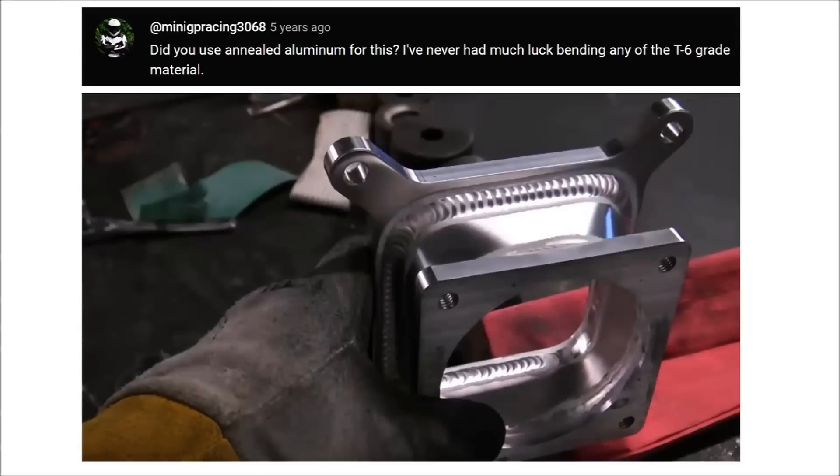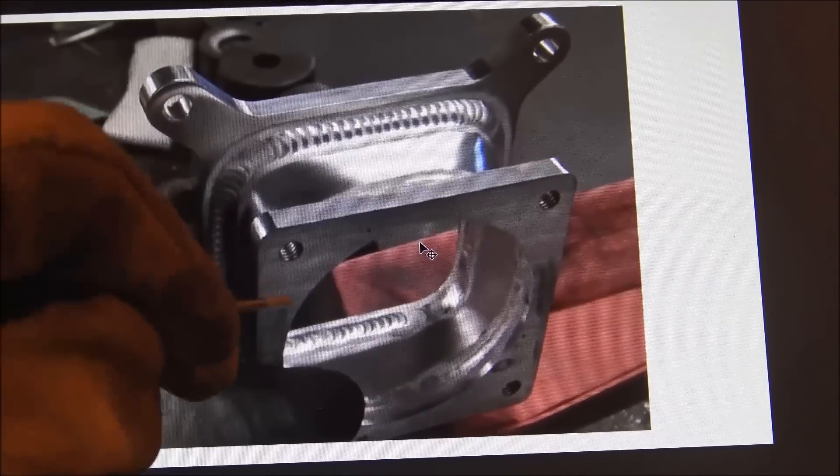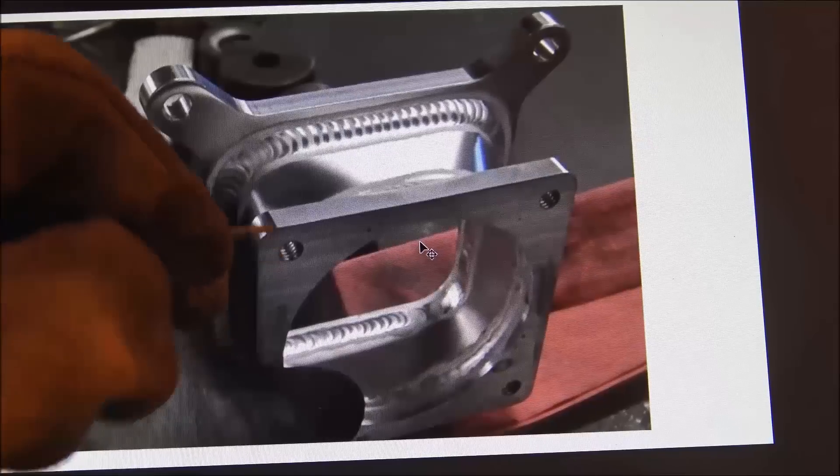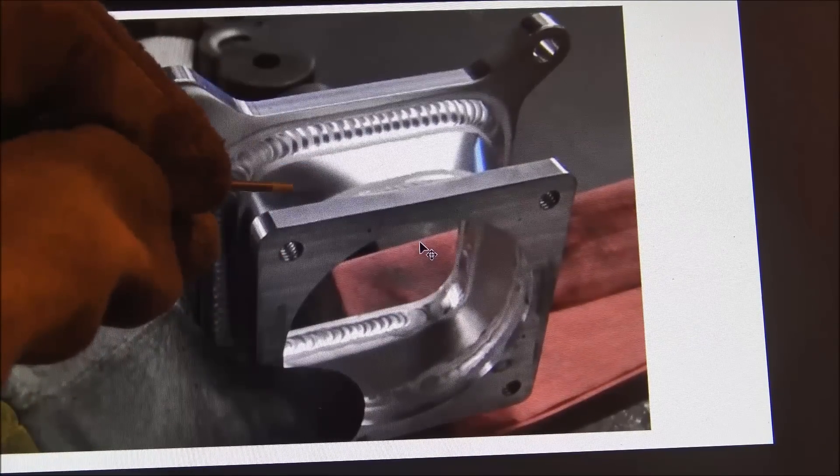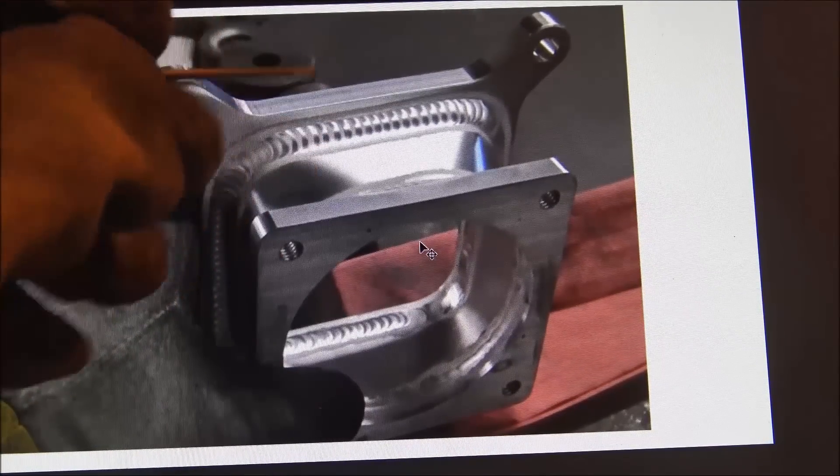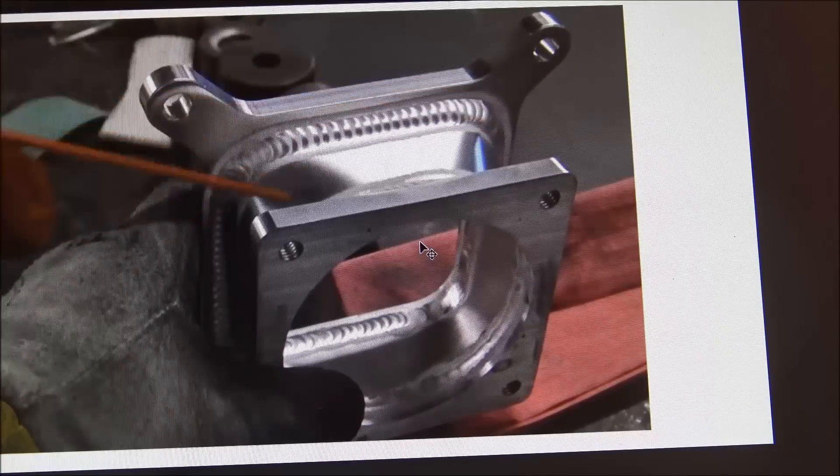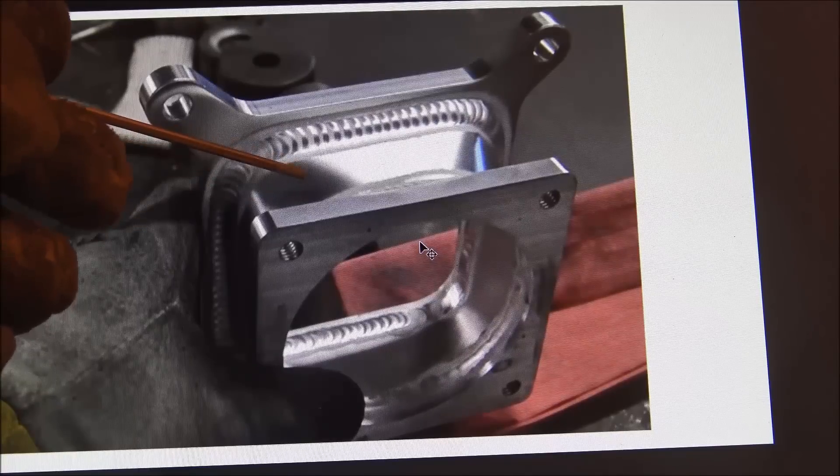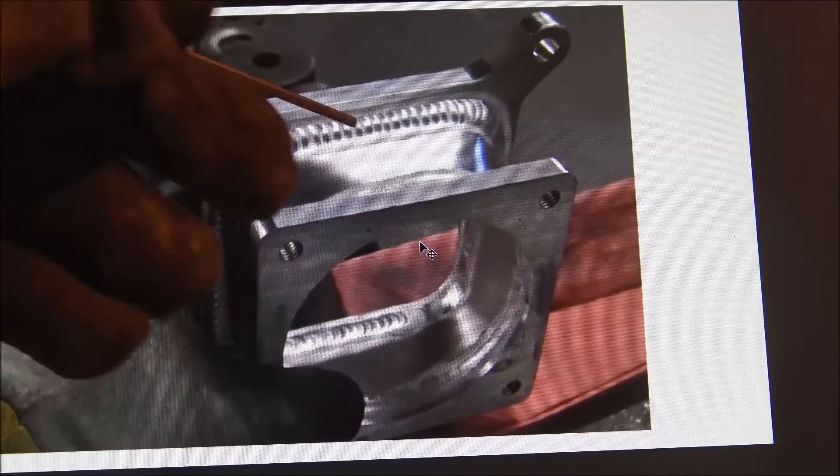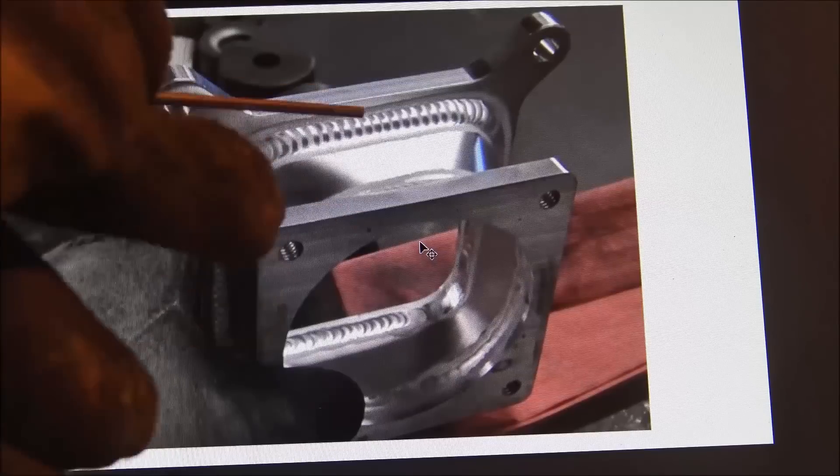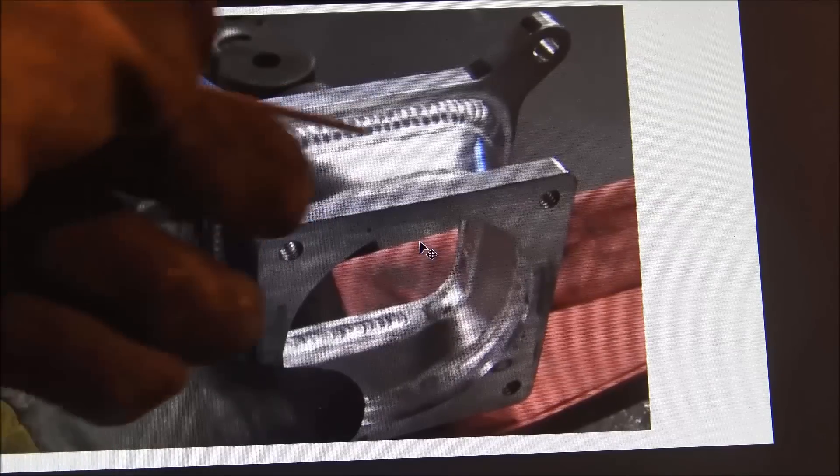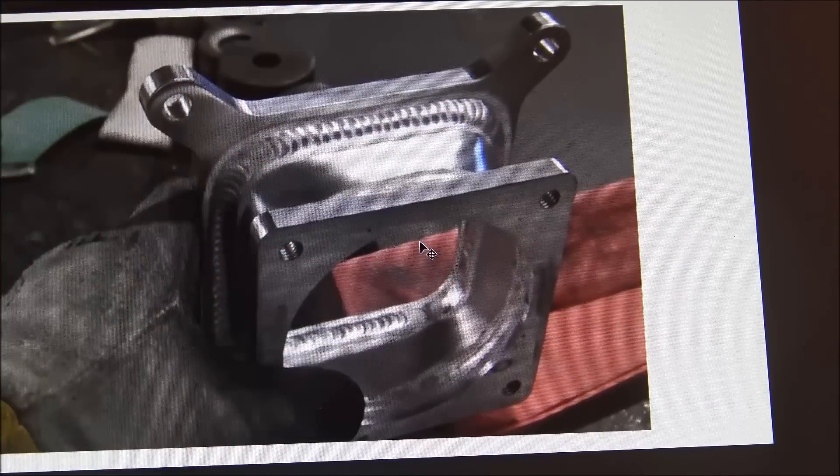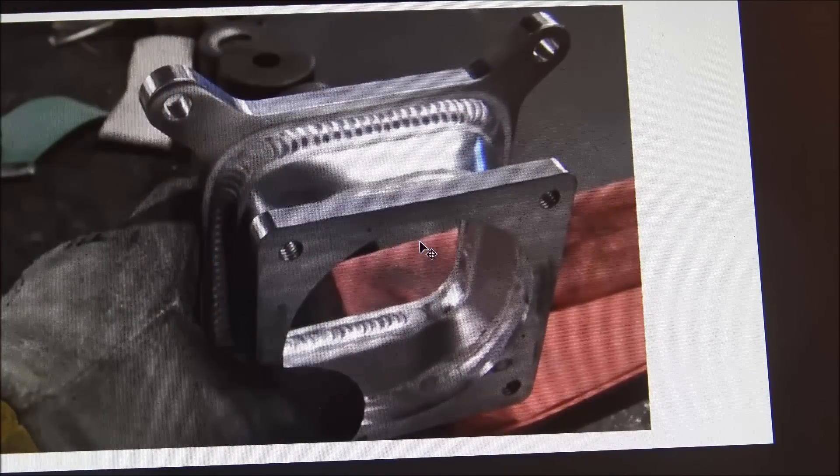Did you use annealed aluminum for this? I've never had much luck bending any of the T6 grade material. For this project, I used 6061 flanges that are three-eighths thick. And then the sheet that I formed was 3003 aluminum eighth inch thick. And I used 3003 because it's really soft compared to 6061 or even 5052. And the problem with it can be if you use 3003 on bigger parts, it's soft and it can flex and fatigue. But as little surface area as there is around this whole thing, I thought 3003 was the best choice. Because it's easiest to hammer form.